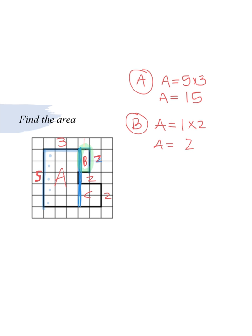And then lastly for C, down here at the bottom, right, that's a two by two. So to find the area of C, we're going to multiply two times two, which the area of that would be four.